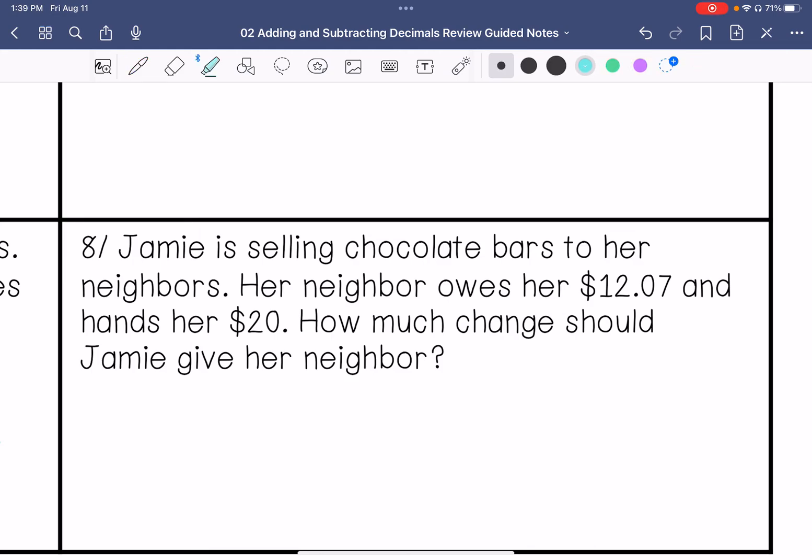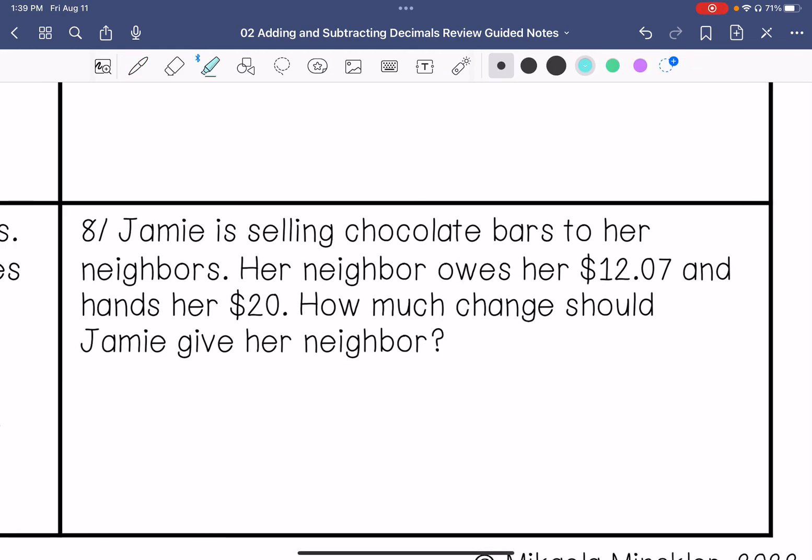Jamie is selling chocolate bars to her neighbors. Her neighbor owes her $12.07 and hands her $20. How much change should Jamie give her neighbor? So when you're finding change, you're going to take the total and subtract how much they owe her. And then we're going to add these placeholders. So we're going to have to borrow. 10 minus 7 is 3, 9 minus 0 is 9, 9 minus 2 is 7, 1 minus 1 is 0. Bring that decimal point down. So Jamie needs to give her back $7.93.